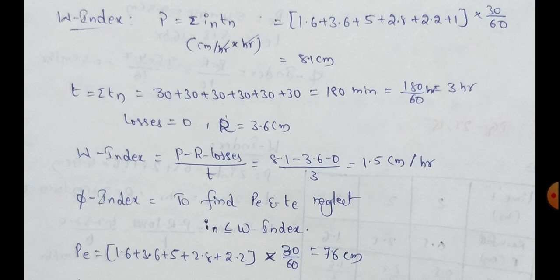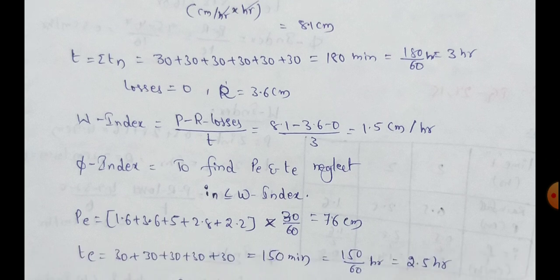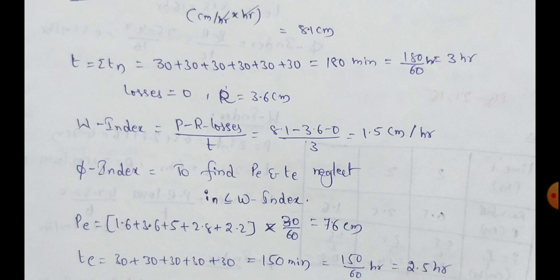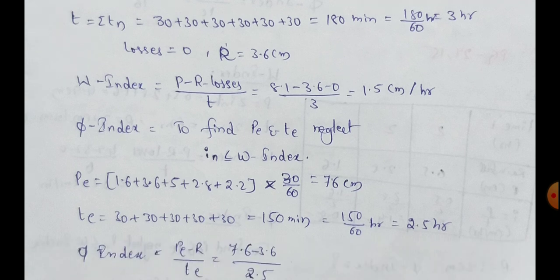Next, we have to find out phi index. To find P and T, we have to find out intensity of rainfall values that means less than or equal to W index. We have to neglect.